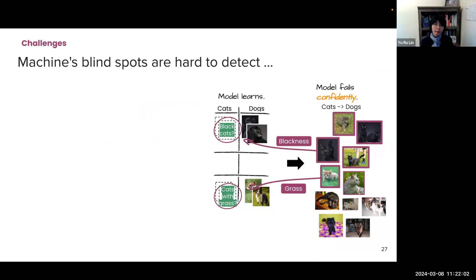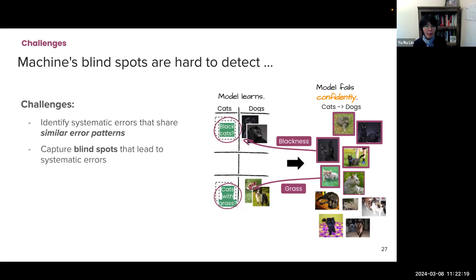So understanding what a model doesn't know is critical in AI systems. So these are challenging because it's very hard to identify the systematic errors that share similar error patterns. And it's hard to capture blind spots that lead to these systematic errors. And moreover, it's even harder to validate and mitigate systematic errors.